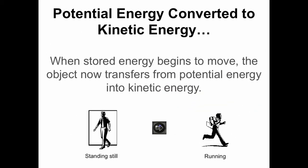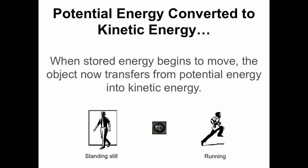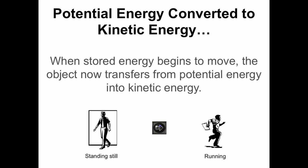Now let's talk about how potential energy is converted into kinetic energy. When stored energy begins to move, the object transfers potential energy into kinetic energy. When a person is standing still, they have the potential to move but are storing their energy — that is potential energy. But when they start running, they have turned all that potential into kinetic. Potential is always stored, non-moving energy; kinetic is always moving energy. If something is moving, it is kinetic. If it has the ability to move but is not, it is potential.